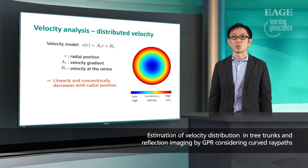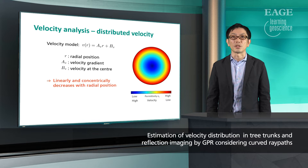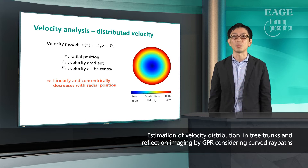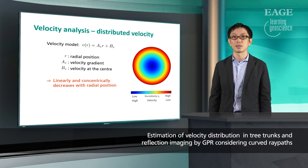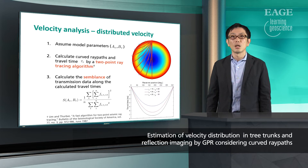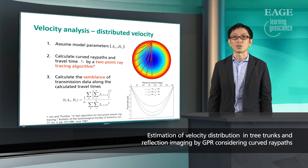To do this, we first model the velocity distribution with a very simplified linear model. In this model, the velocity linearly and concentrically decreases with radial position. With this model, we can parameterize the distribution with two parameters, A and B, which indicate velocity gradient and velocity at the center. With the model, velocity analysis is performed similarly to the constant velocity case.